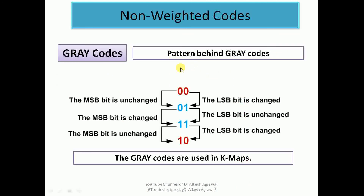Since gray codes are not based on the weights of the bit position, there is a pattern behind them. Moving from 00 to 01, the LSB bit changes and the MSB bit is unchanged. From 01 to 11, the LSB bit remains unchanged and the MSB bit changes. From 11 to 10, the LSB bit changes and the MSB remains the same. In gray codes, moving from one level to another, only one bit position changes and all other bit positions remain the same. Applications of gray codes include Karnaugh maps (K-maps) and memory locations.